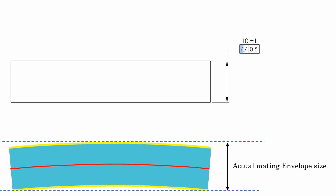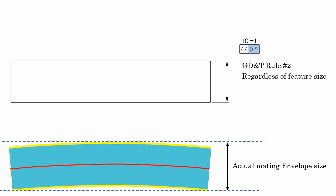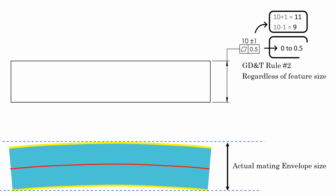There are no modifiers applied in the feature control frame — no MMC or LMC modifier are present with the flatness tolerance. So according to GD&T rule 2, we default to regardless of feature size condition. Regardless of feature size means the flatness tolerance 0.5 mm and the size tolerance plus minus 1 mm are independent of each other. The plate thickness can vary anywhere between 9 to 11 mm and the flatness can vary from 0 to 0.5 mm, with no direct relation between size variation and flatness variation.